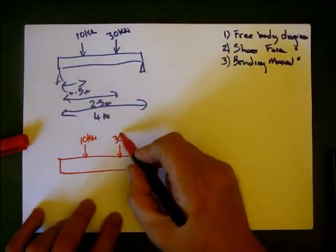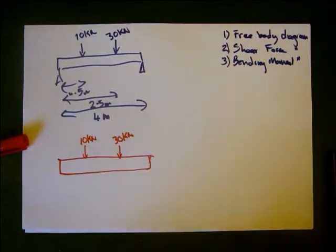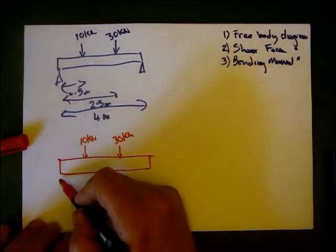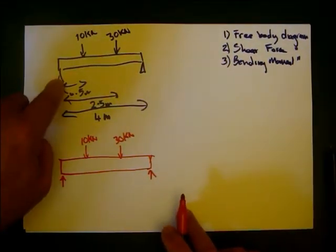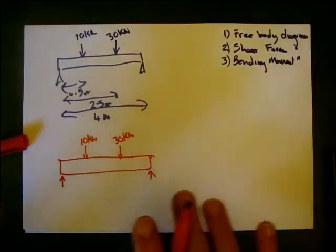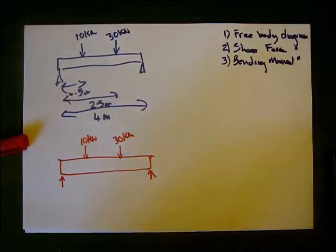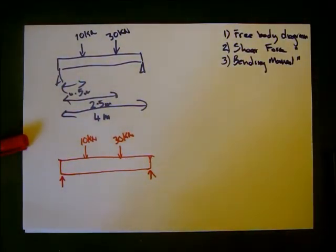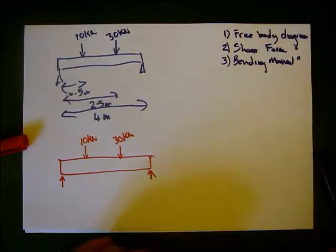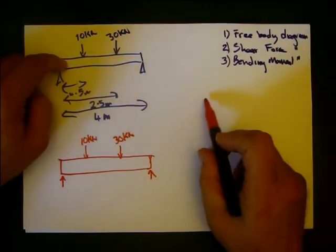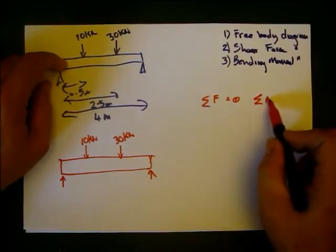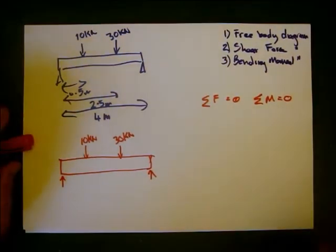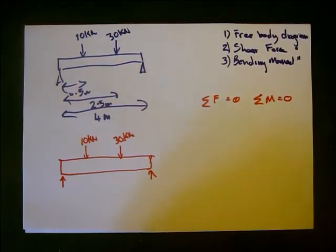We know here there's 10 kilonewtons acting, and at this point there's 30 kilonewtons. But we also know there's two other forces acting here, one at this support and one at that support. Now we know for a static system where that beam is sitting there, sum of forces equals zero, sum of moments equals zero. That's the very definition of a static system.